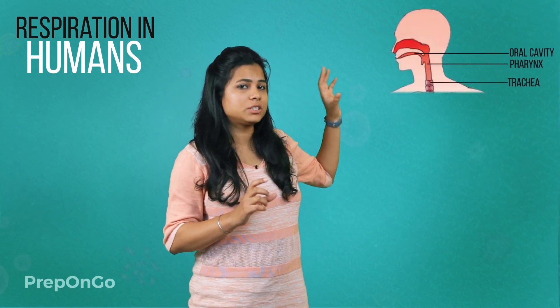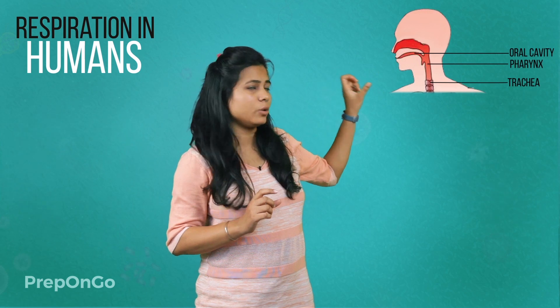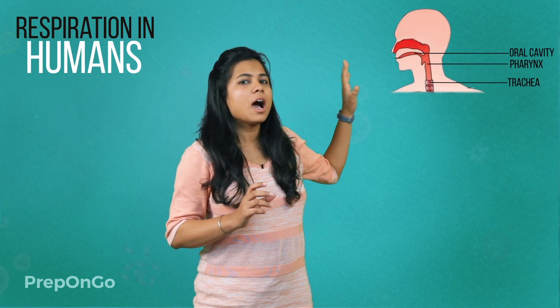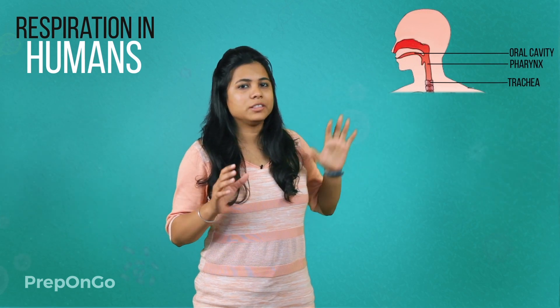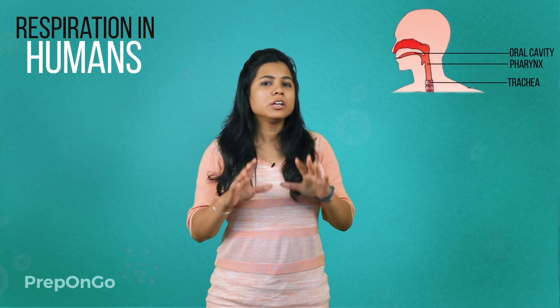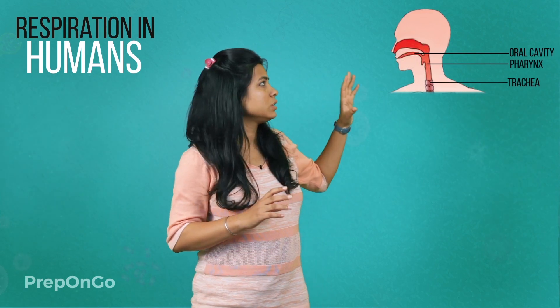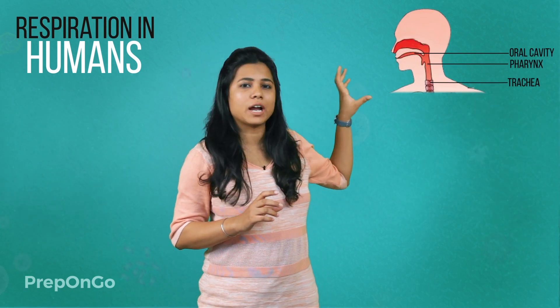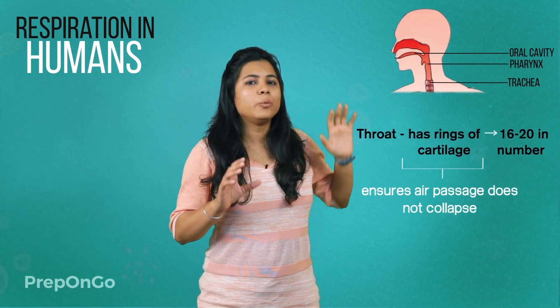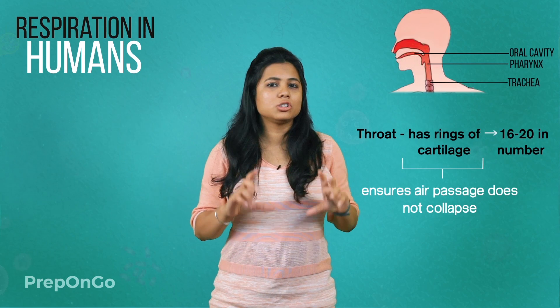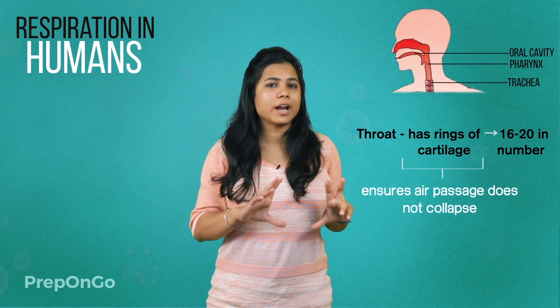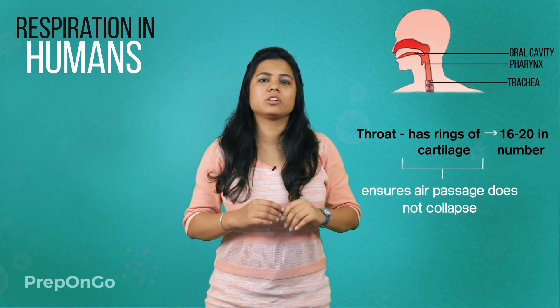The air which is taken in through the nostrils passes through the throat and then into the lungs. In the throat there are rings of cartilage which ensure that the throat, or the trachea, does not collapse.